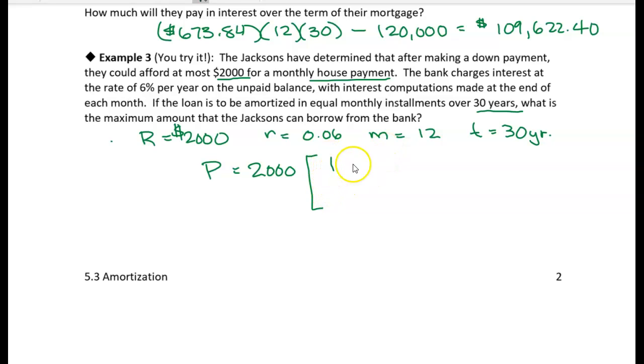Just plug the numbers in. So we have 1 minus 1 plus i, which is 0.06 over 12, and then to the minus n, which is going to be the number of payments over the 30 years. So 30 years, 12 months per year is 360 payments. And then we're going to divide by i, which is again 0.06 divided by 12. That's the annual interest rate divided by the number of conversion periods per year.